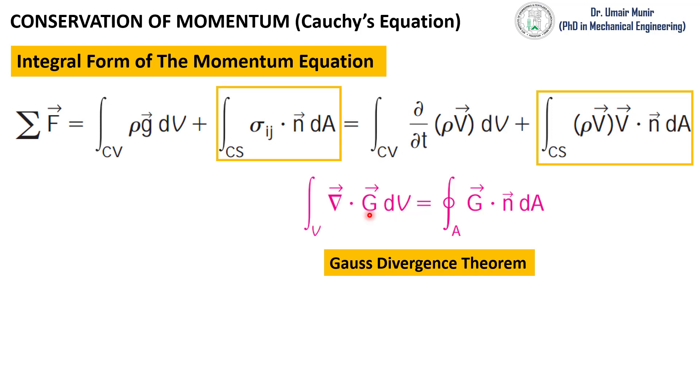Next we will convert this surface integral into a volume integral. By comparing these two surface integrals we can see that G is equal to rho*V*V, and when we replace this G with rho*V we will get the volume integral in this form.